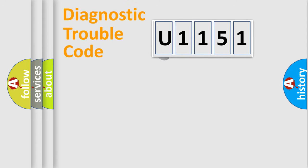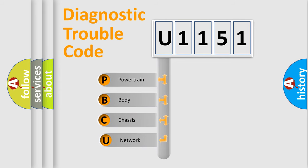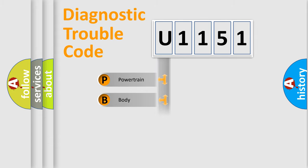First, let's look at the history of diagnostic fault code composition according to the OBD-2 protocol, which is unified for all automakers since 2000. We divide the electric system of the automobile into four basic units: powertrain, body, chassis, and network.